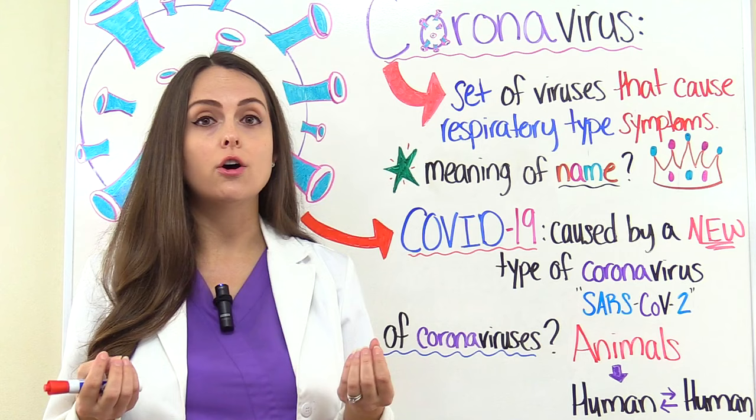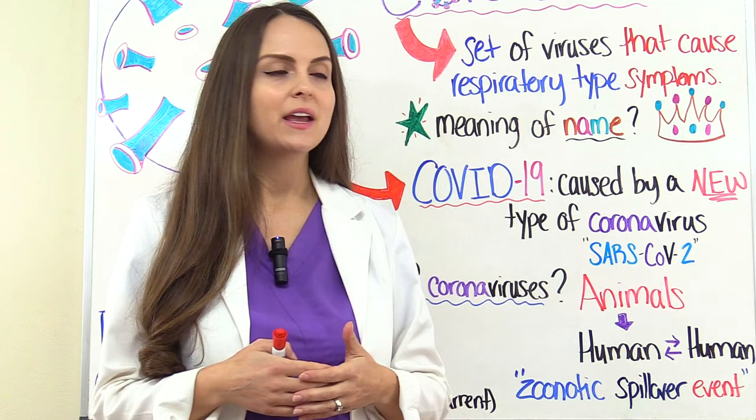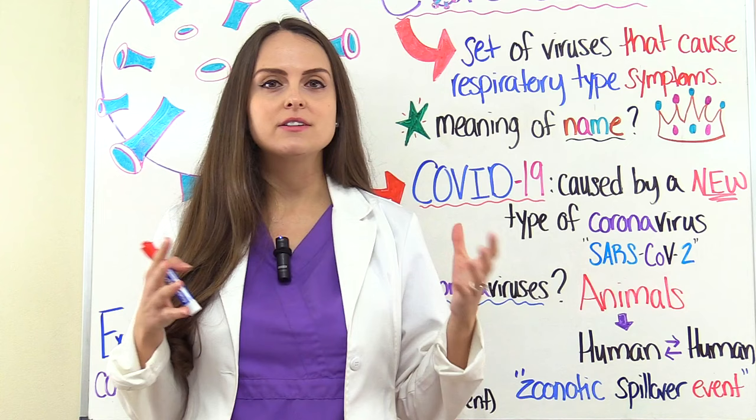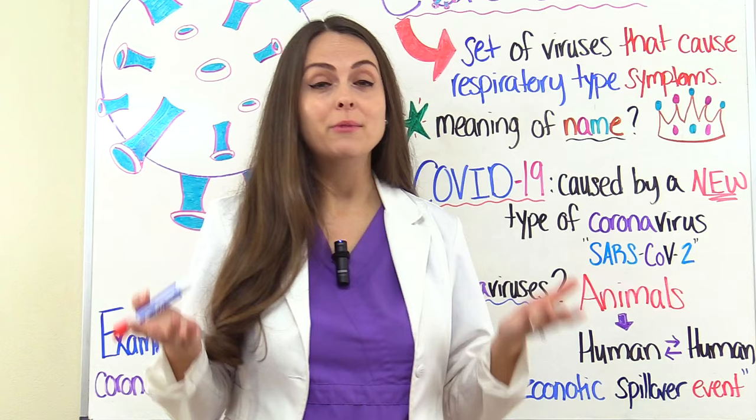So where do coronaviruses originate? They can come from an infected animal. An animal with a coronavirus can spread it to a human, which leads that human to spread it to other humans, potentially causing an outbreak. When it jumps from animals to humans, this is called a zoonotic spillover event. We've actually seen these events before.